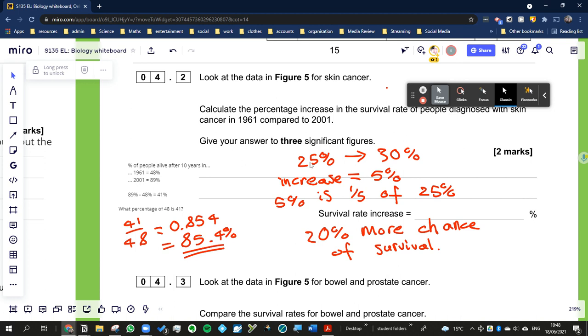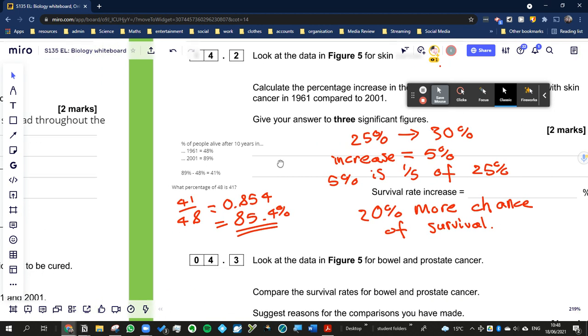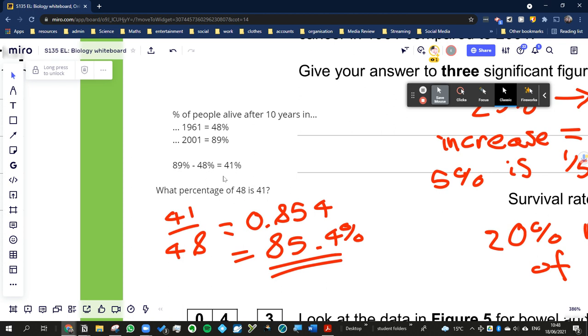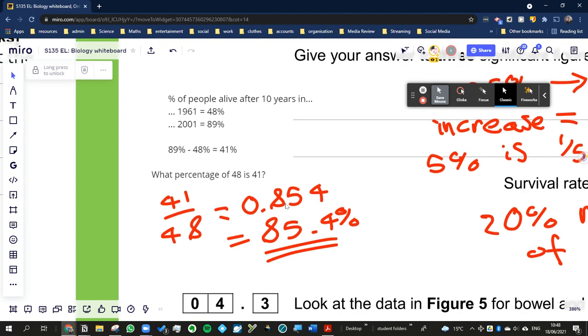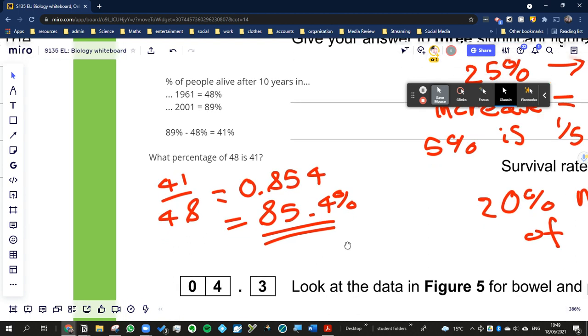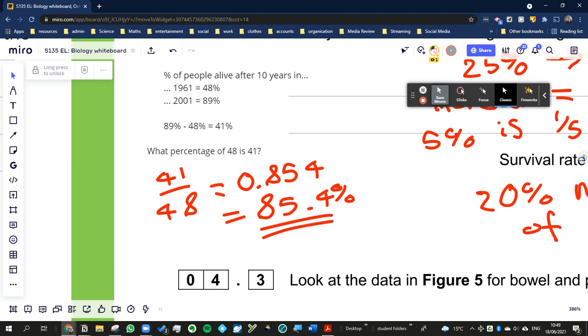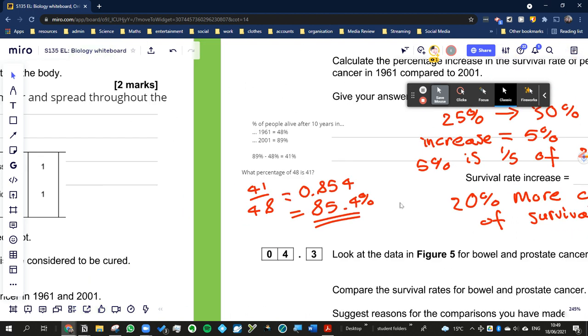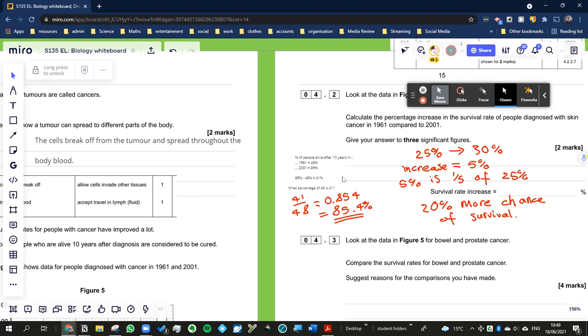We've got to do the same here. The change or the increase is 41. What percentage of 48 is 41? We go 41 divided by 48, the decimal number is 0.854, and therefore the percentage is actually 84.4%. So it's going to catch a lot of people out.